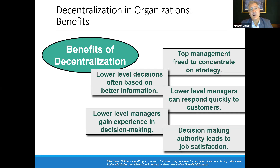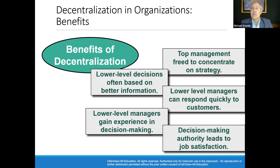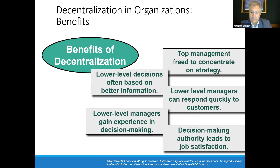There are obviously benefits and drawbacks. Lower level decisions are often based on better information — managers on site in a particular location know what's going on and can make better decisions. Lower level managers also gain experience in decision making. Top management is freed up to concentrate on bigger issues and strategy. Lower level managers can also respond more quickly to customers — if there's a complaint in Providence, the local manager can handle it rather than sending it to Chicago.